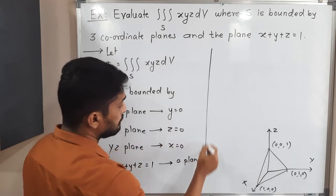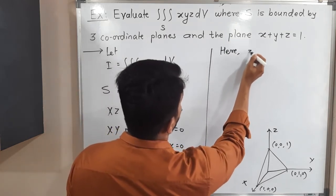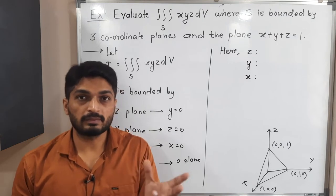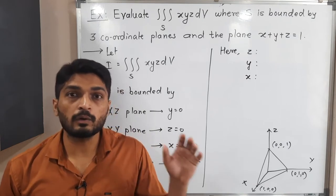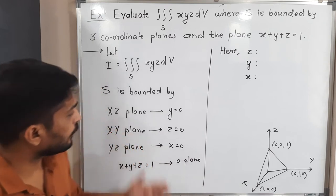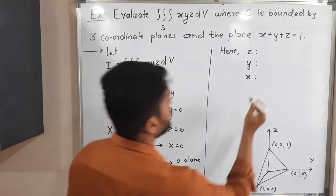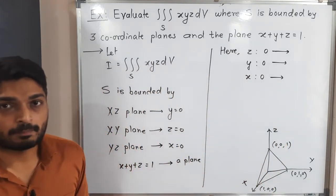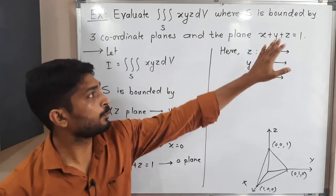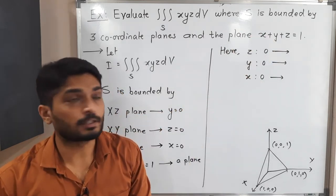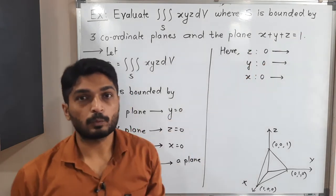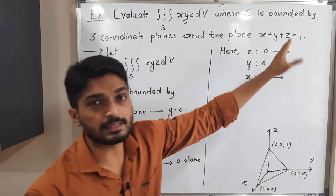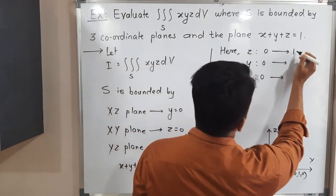Here is a simple technique to find limits. We will find the limits of z first, then y, then x. The lower limits are easily found: x = 0, y = 0, z = 0. We focus on upper limits. For the upper limit of z, we keep z on one side and shift x and y to the other side from x + y + z = 1, giving z = 1 − x − y.